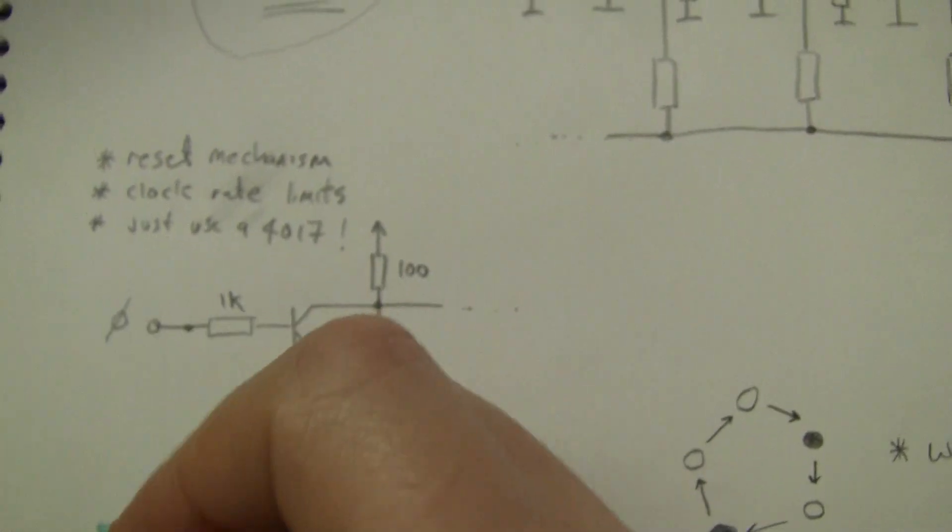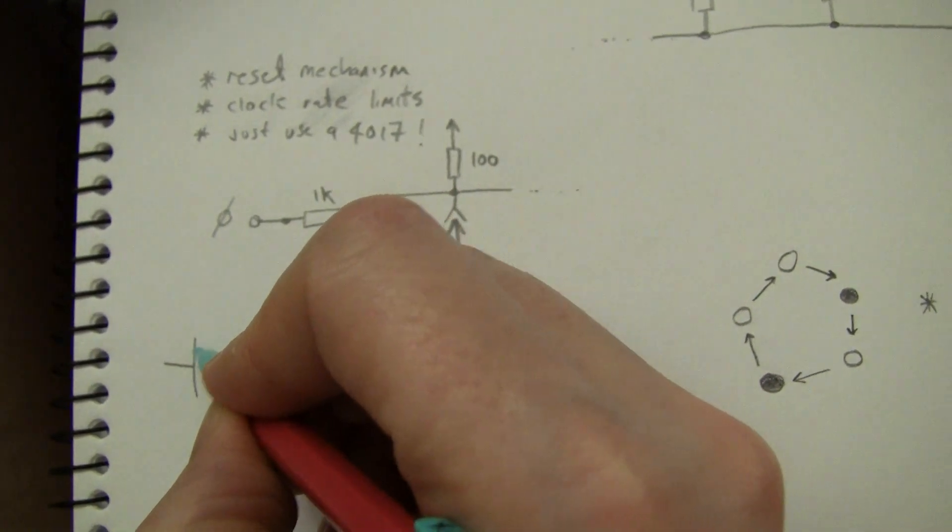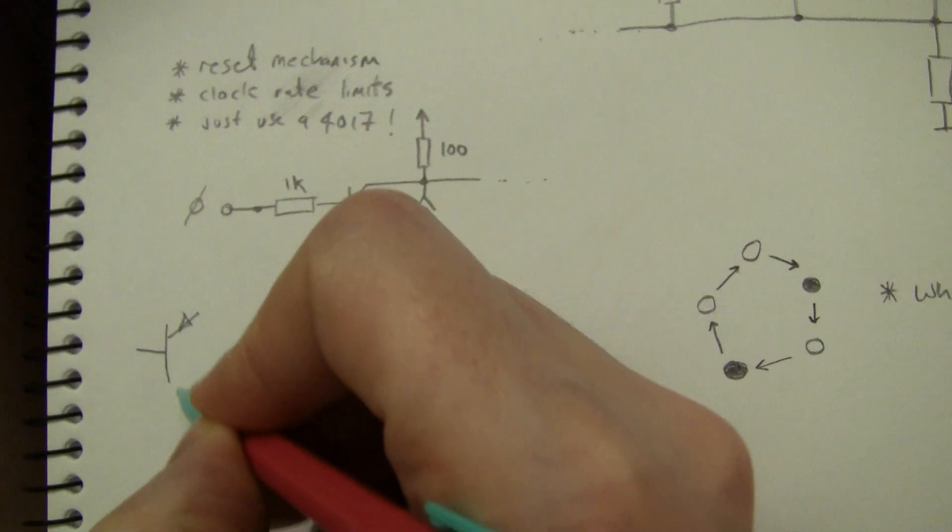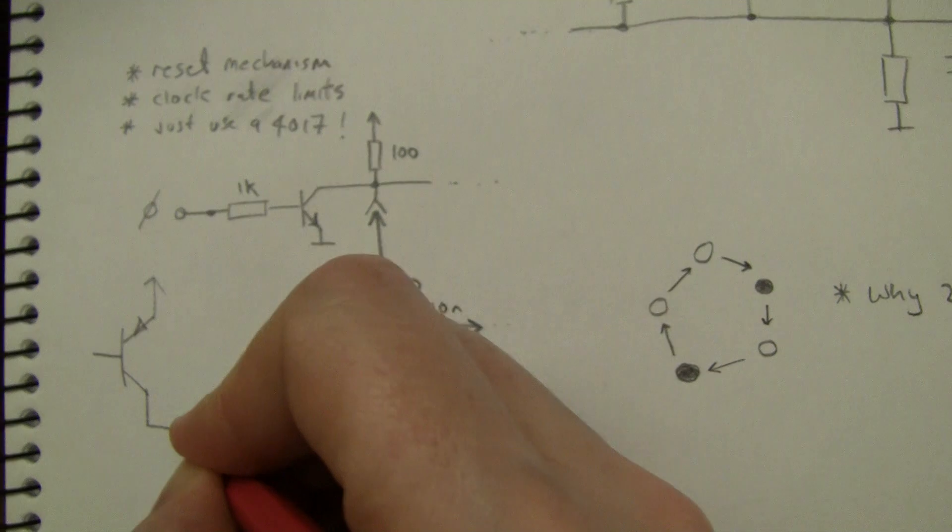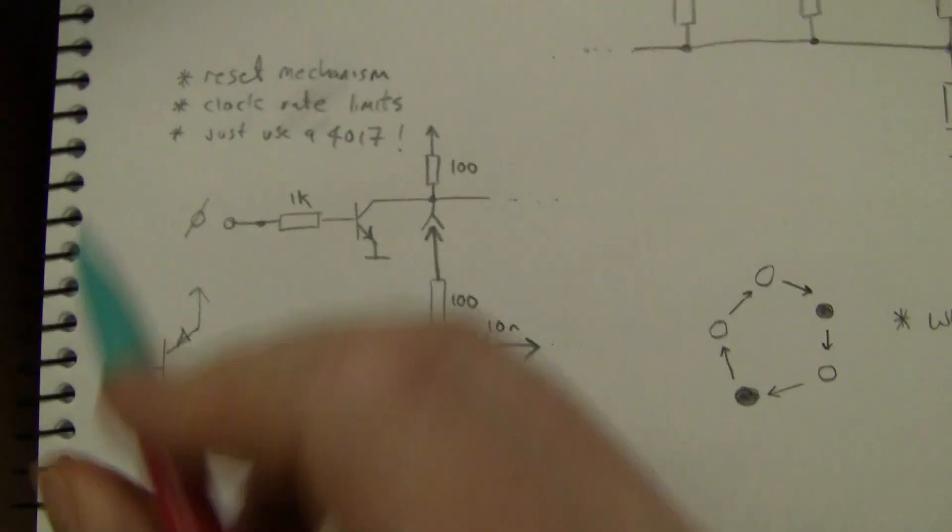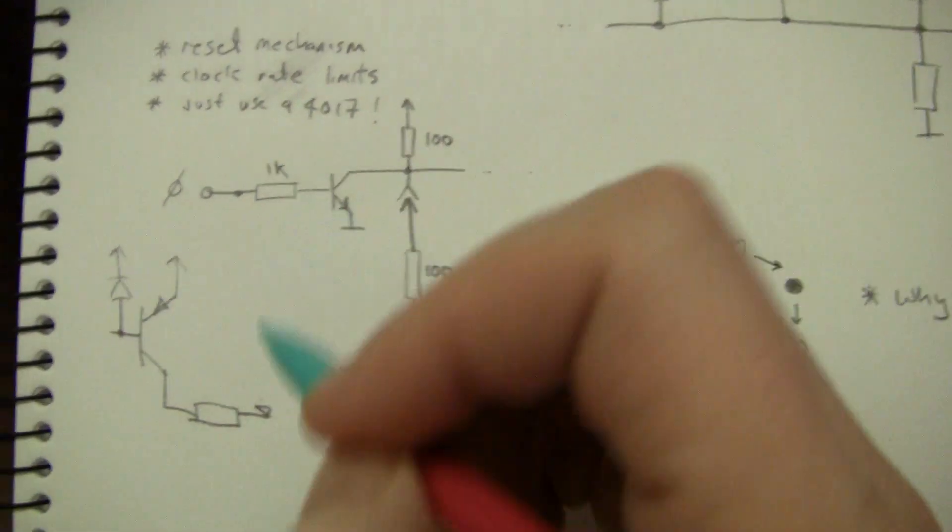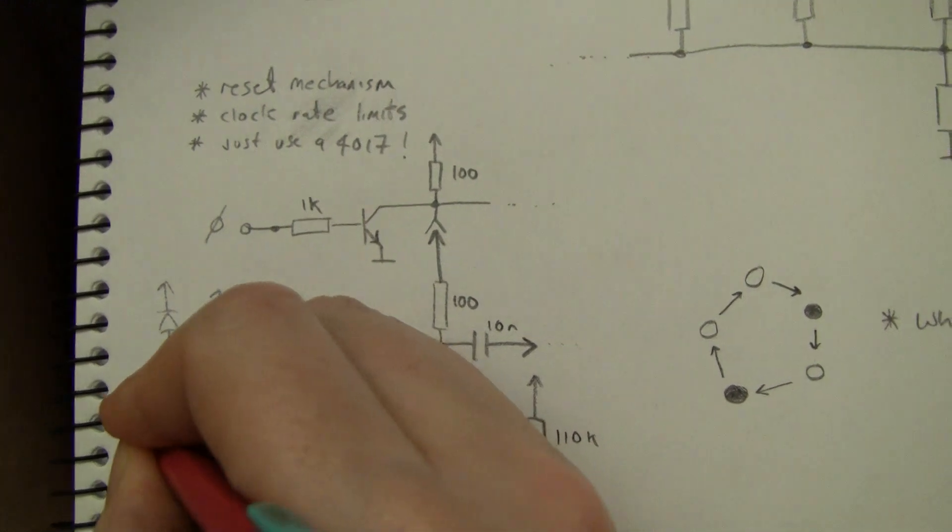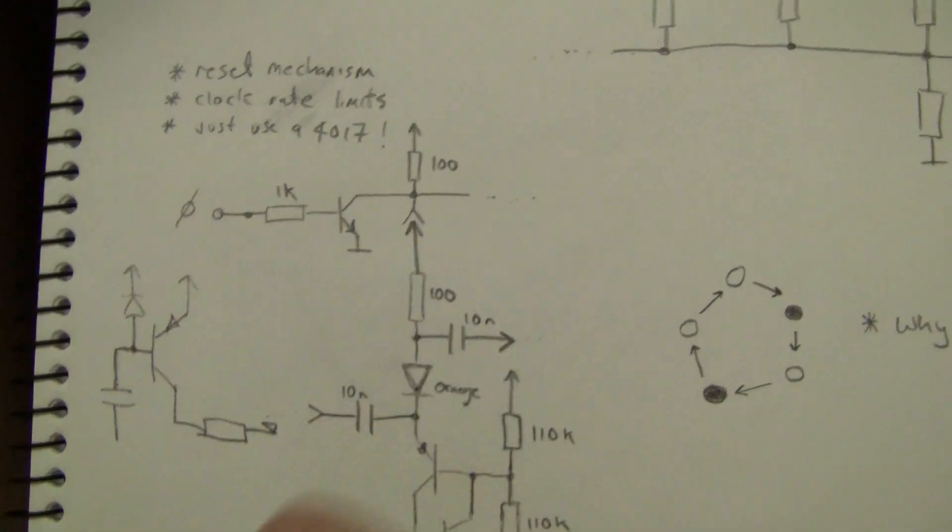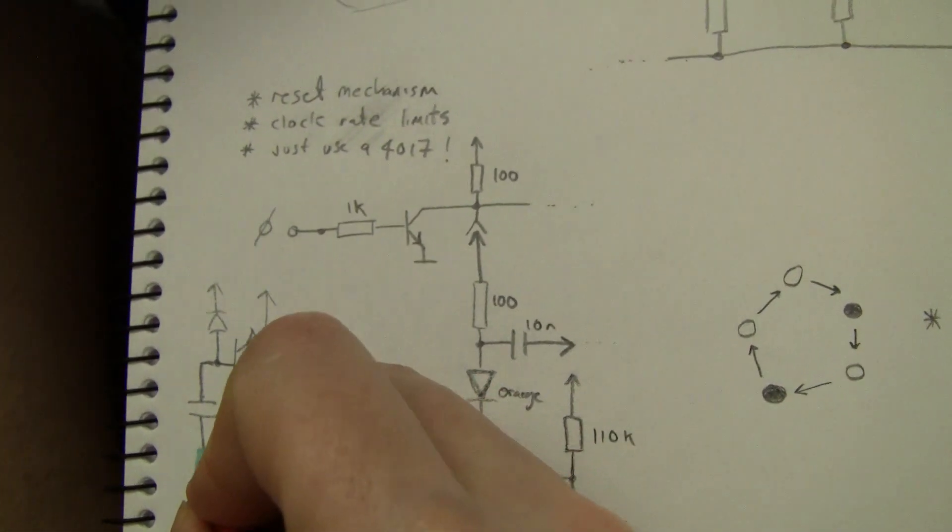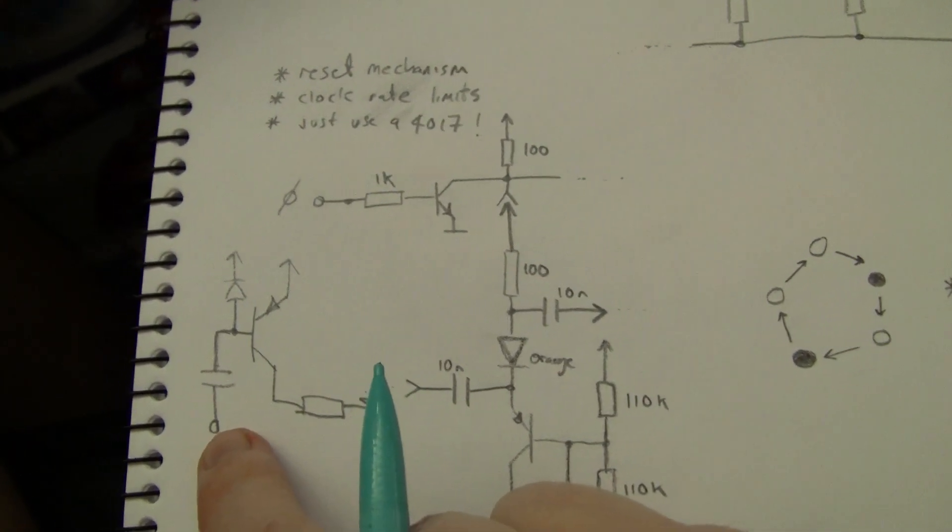Alright, so that point there is actually connected to something that looks like this. That's a 1k resistor and we have a diode going like so, and we're using capacitively coupled edge-triggered logic to clock it.